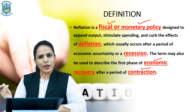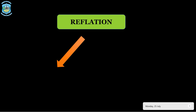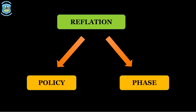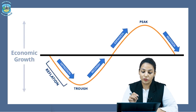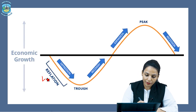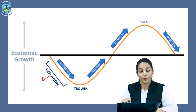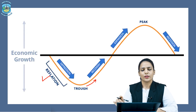In economics, contraction refers to a stage of the business cycle in which the economy as a whole declines. As such, the word reflation can be used to define a policy undertaken by the government or a phase of recovery — specifically, reflationary policies are undertaken during recession and depression, and it can be called the first phase of recovery.